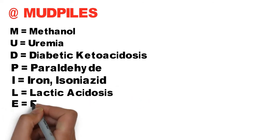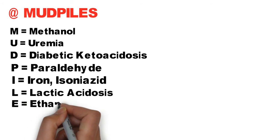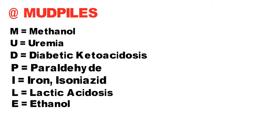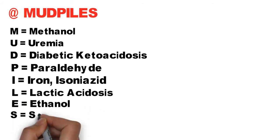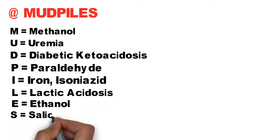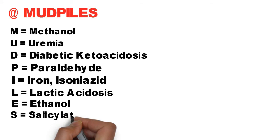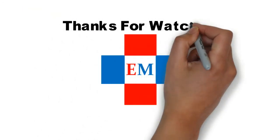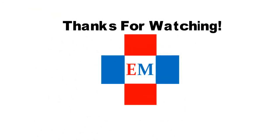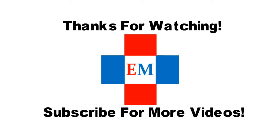E is for ethanol, and S is for salicylates or aspirin. Thanks for watching — subscribe for more videos.